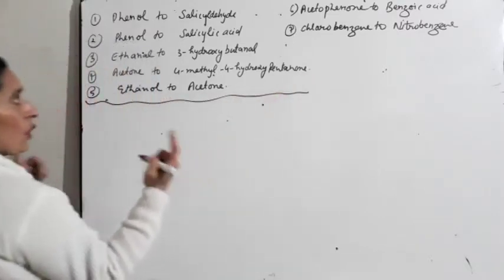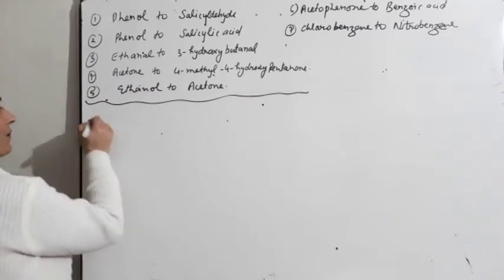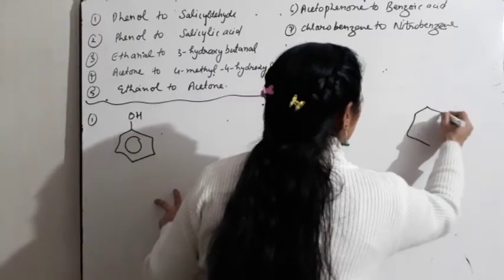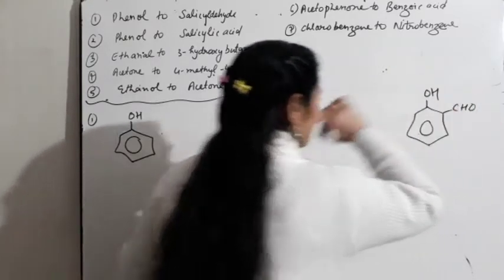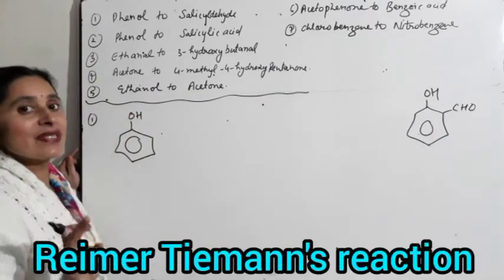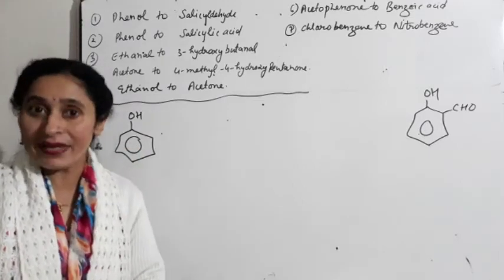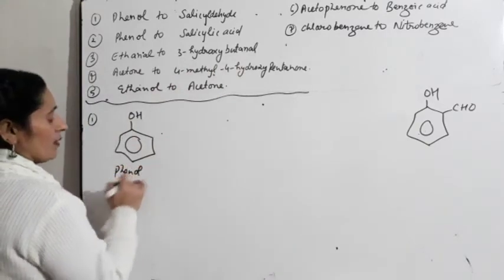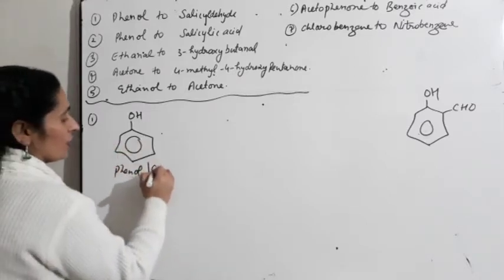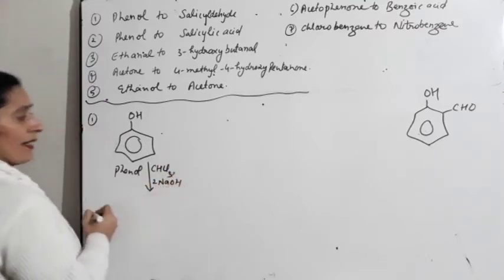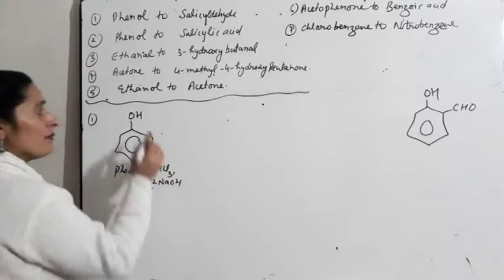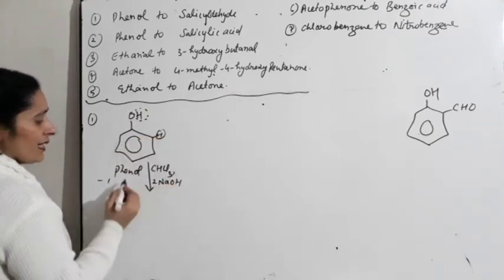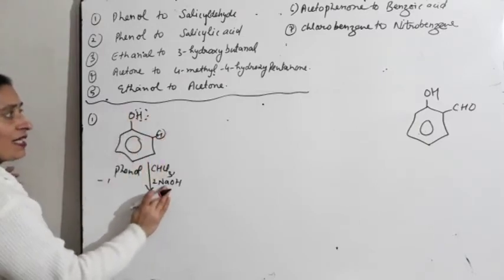Yeh kuch aur conversions: Phenol to salicylaldehyde — this is number one. Yeh hai phenol aur mujhe phenol se banana hai salicylaldehyde. This is Reimer-Tiemann reaction. Sometimes wo direct nahi poochhen ge name reaction ke andar — they will ask ki isko isme convert kijiye. Phenol ke andar hum add karte hai chloroform and sodium hydroxide. One molecule of sodium hydroxide removes this hydrogen — ek H aur ek Cl nikalata hai, aur sodium iski jagah le leta hai.